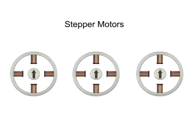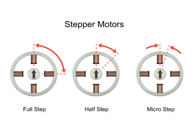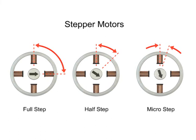Each pulse moves the shaft through a fixed angle defined by the multiple toothed electromagnets arranged around a gear-shaped rotor. Stepper motors have three step modes of operation that include full, half, and microstepping. The type of step mode output of any stepper motor is dependent on the design of the driver, which also controls both the step angle and speed of the motor by switching the field coils in a set sequence.